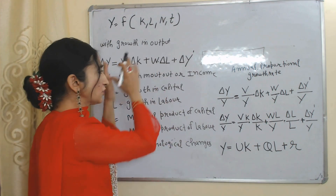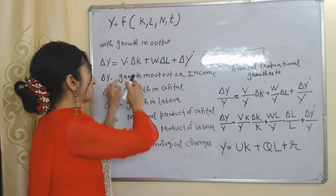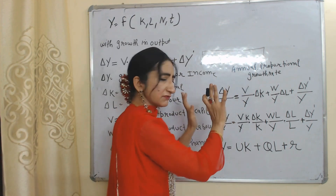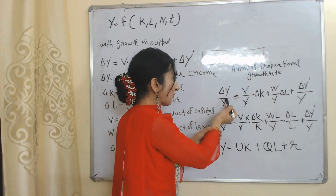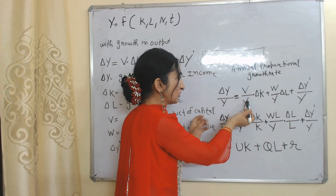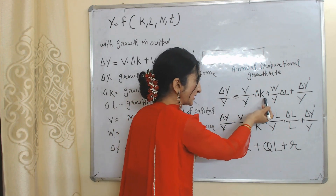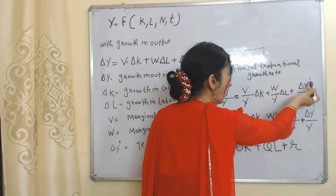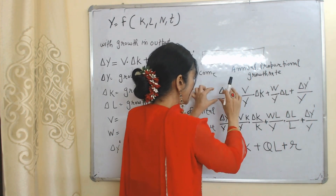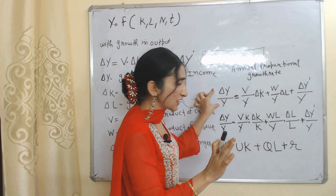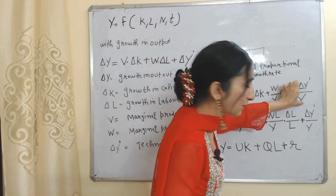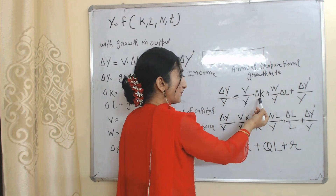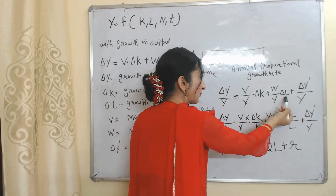In order to find the annual proportional growth rate, we divide both sides of this equation by Y. After doing this, our equation becomes: ΔY/Y = (V/Y)·ΔK + (W/Y)·ΔL + ΔY'/Y. This gives us the proportional growth rate in national income and in technology. We still need the proportional growth rates in capital and in labor.